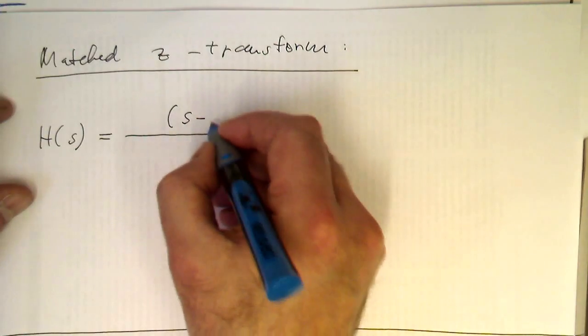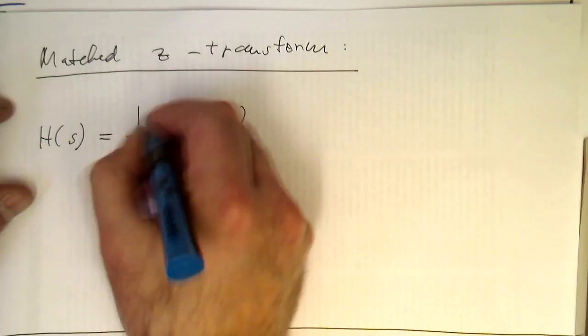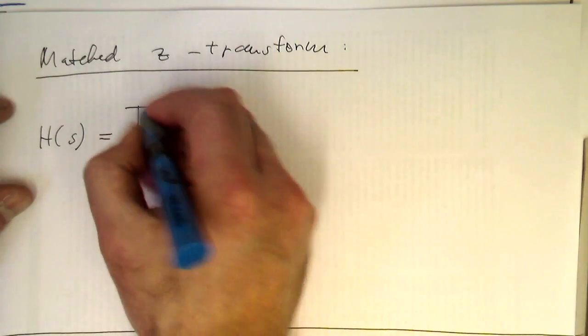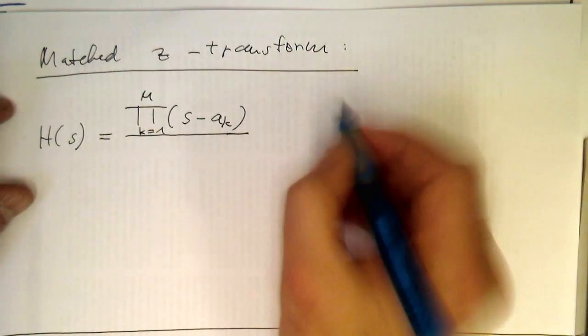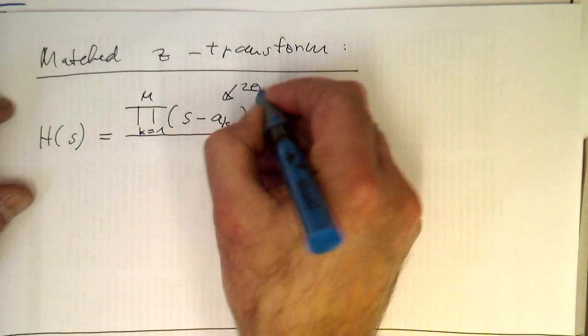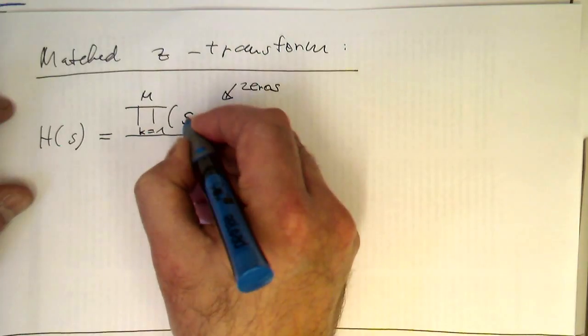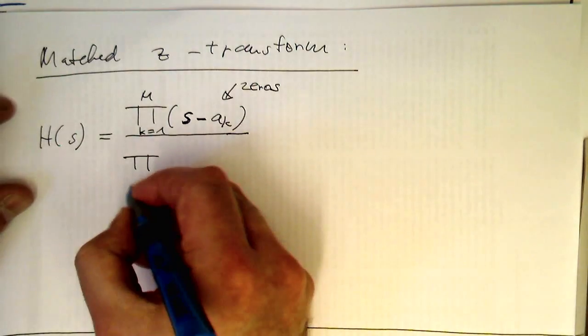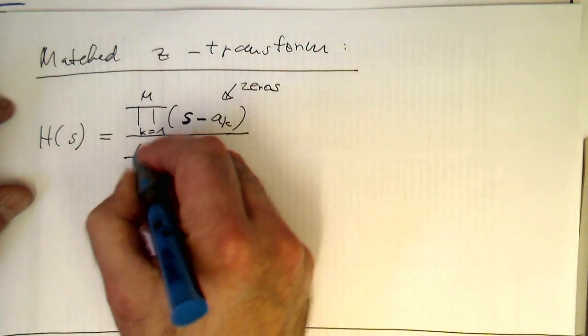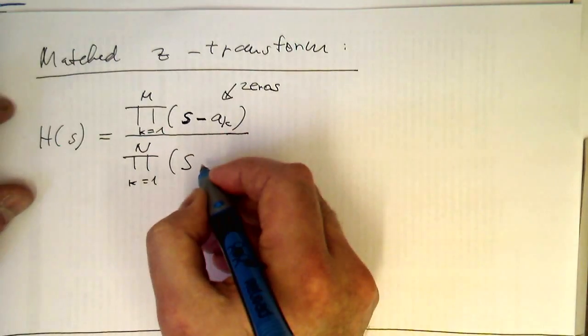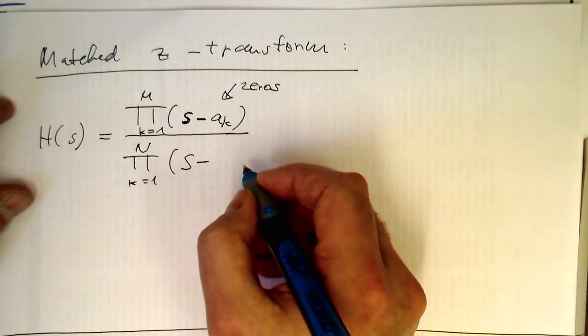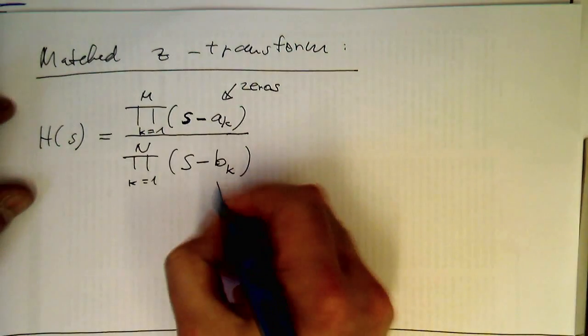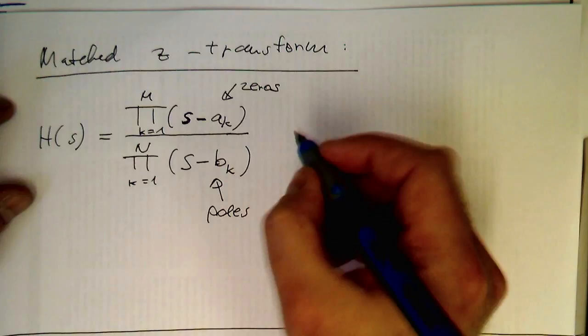We have these (S minus a_k) as a product here, K running from one to M for example. So we have here so-called zeros—these are just complex frequencies where the output is zero. And we have our poles, (S minus b_k). So these are our poles.